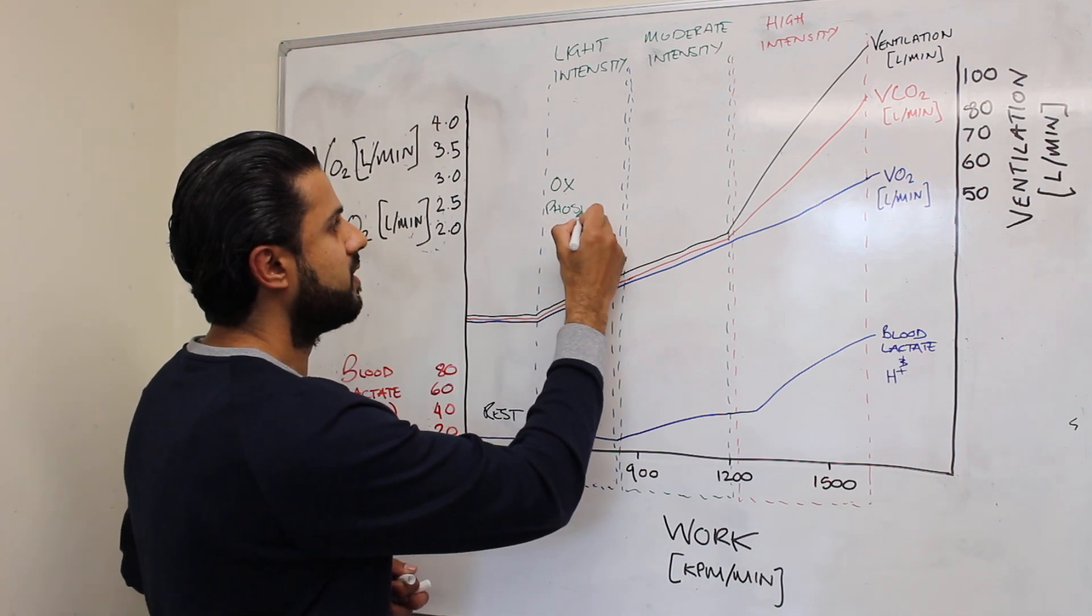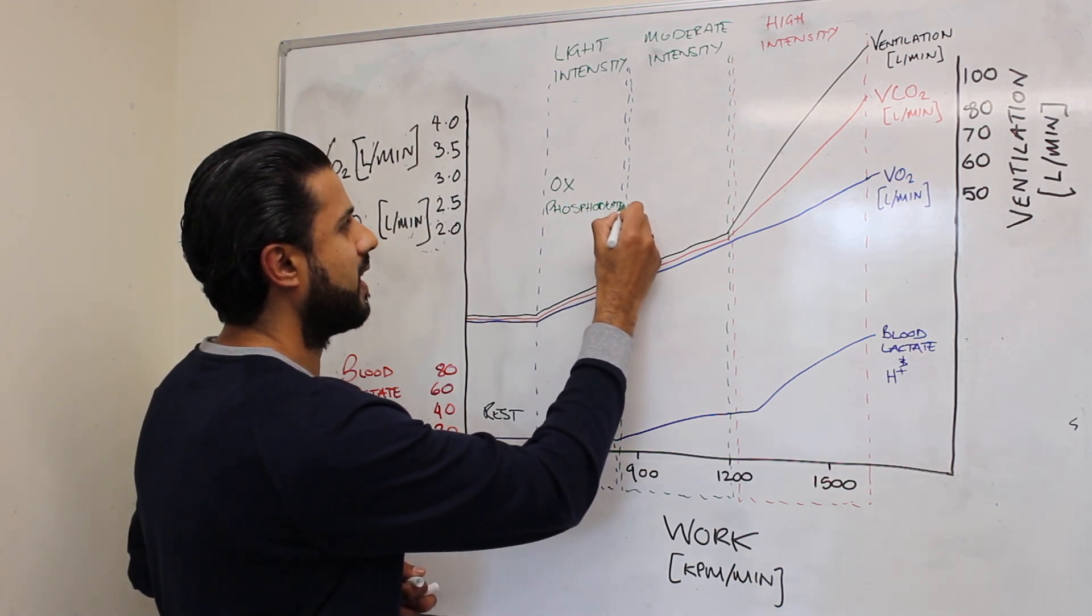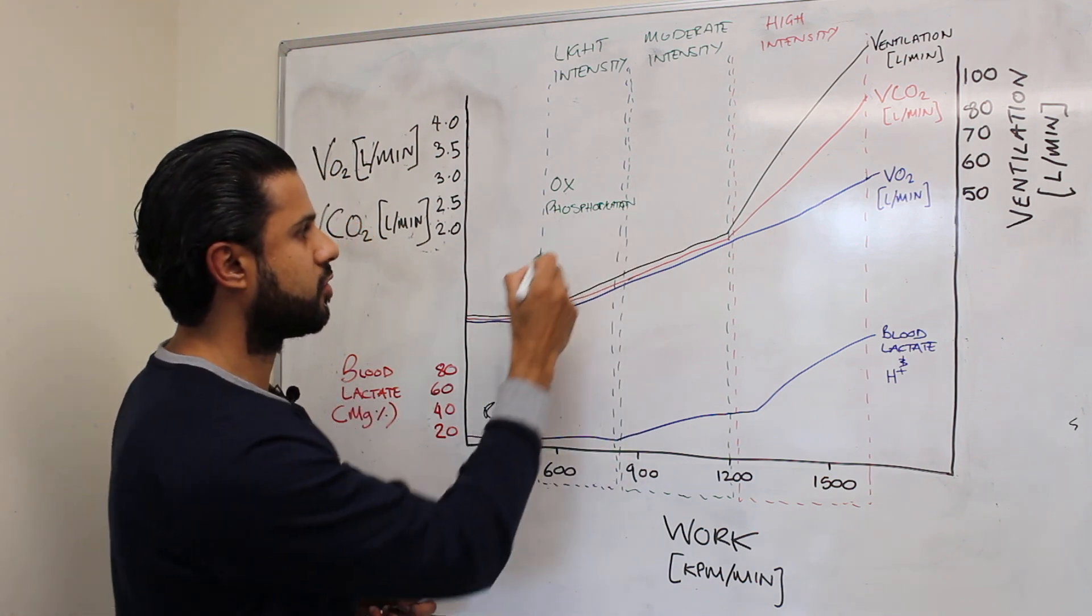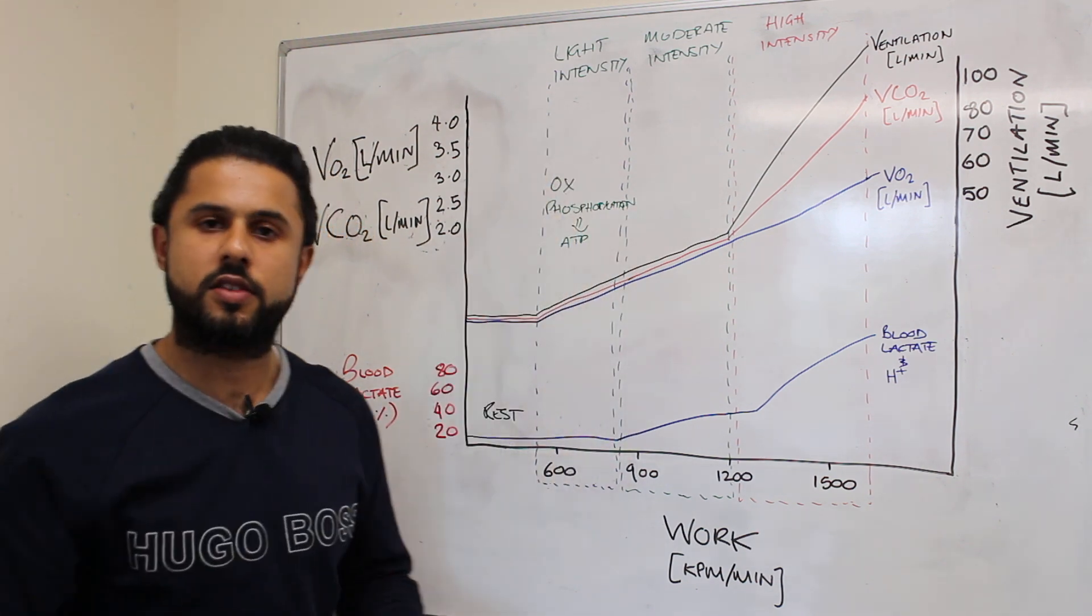So this is basically phosphorylation. We should be able to fit that across here. Oxidative phosphorylation to produce ATP in this very light intensity running stage.